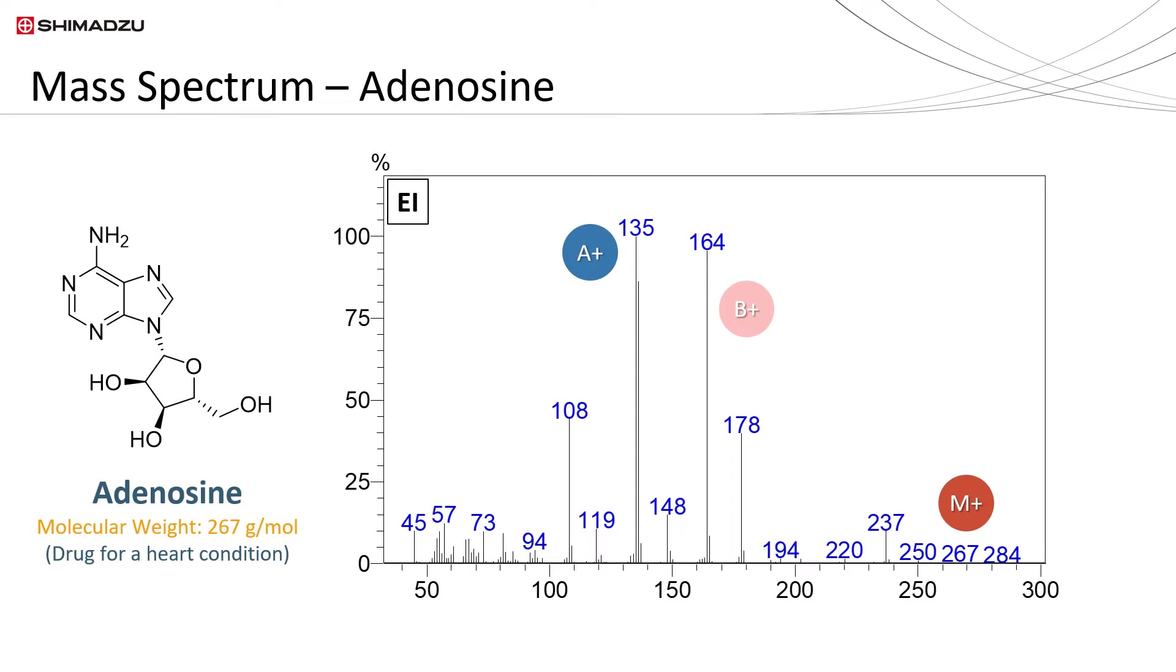Different compounds will have different mass spectra that can be used for compound identification by comparing with mass spectra in databases.